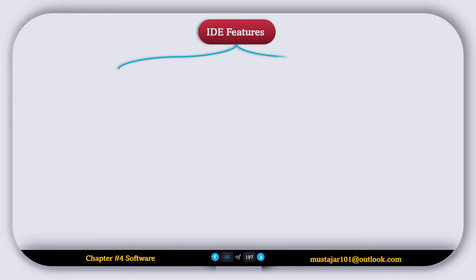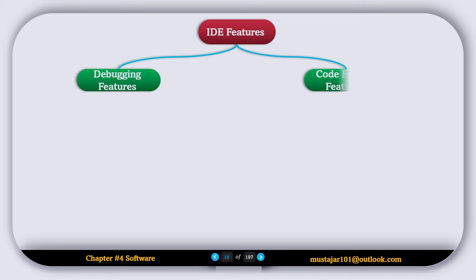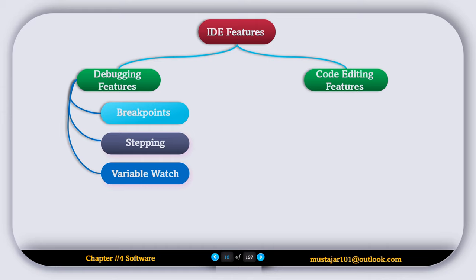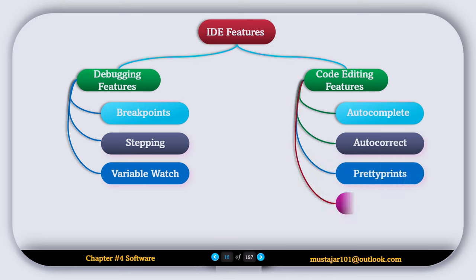We can categorize IDE features into two types. The first is debugging features, which include breakpoints, stepping, and the variable watch window. The second is code editing features, which include auto-completion, auto-correction, pretty prints, and block minimizing.